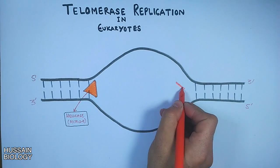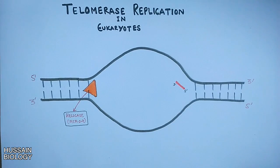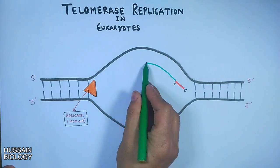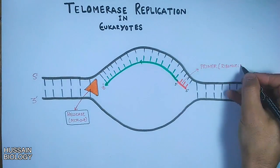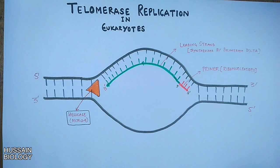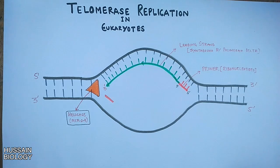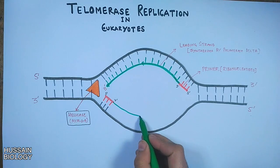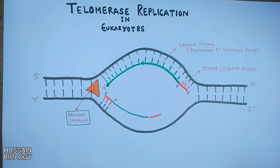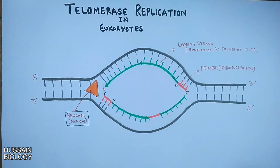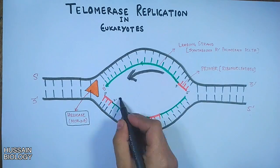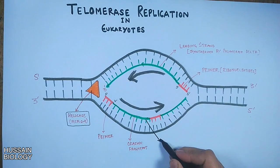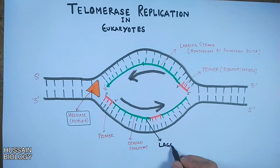On the upper strand, a primer is added which provides a 3' hydroxyl end for the polymerase enzyme, and it's elongated in leading strand synthesis. On the lower strand, having direction 3' to 5', multiple primers are added and the polymerase elongates these primers in the process of lagging strand synthesis, where we get the Okazaki fragments. We have already discussed these processes in detail.